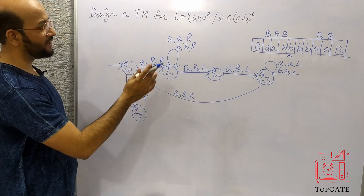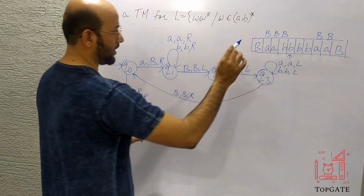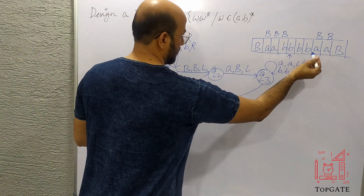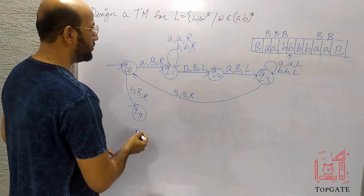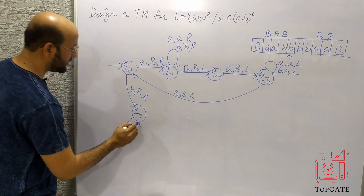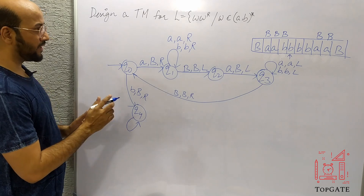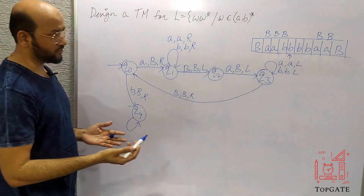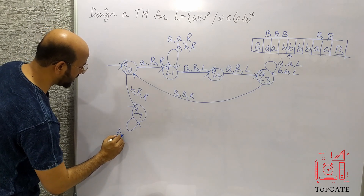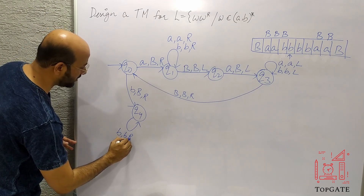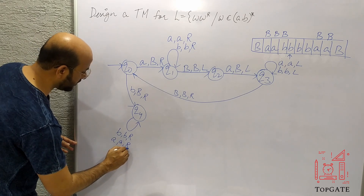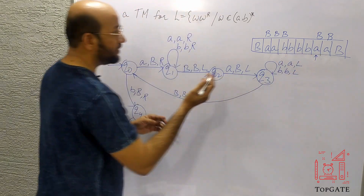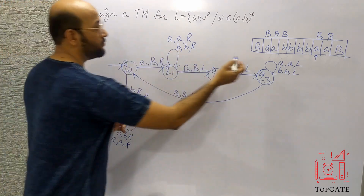At Q4, I have to skip everything — all the B's and A's — moving right using a self loop: find B, keep B, go right; find A, keep A, go right. All elements are skipped until the pointer reaches the B on the right side, where I expect to find the matching B. Then at Q4, finding this last B, keep it as B and move left to Q5.